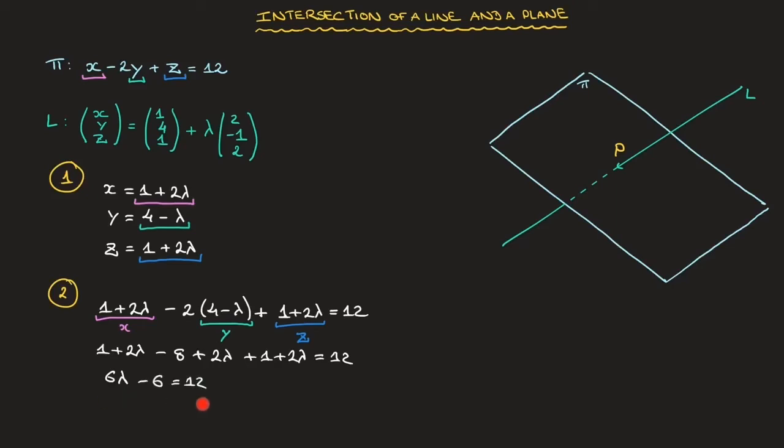Now solving this equation for lambda leads to 6 lambda equals 12 plus 6, so that's 18. And finally, dividing both sides of this equation by 6, we find that lambda equals 18 divided by 6, which is 3.